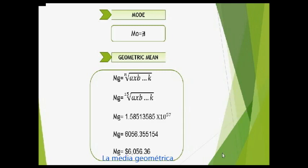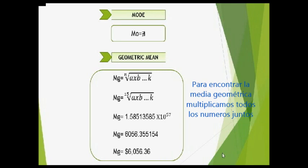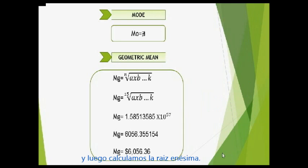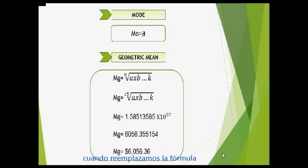Geometric Mean: To find the geometric mean, we multiply all the numbers together and we calculate the n-th root, where n represents the total number of values in the dataset. When we replace the formula, we get the geometric mean of $6,056.36 dollars.